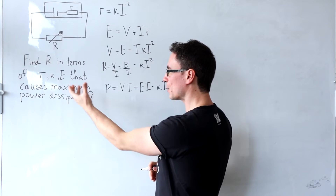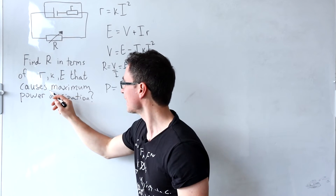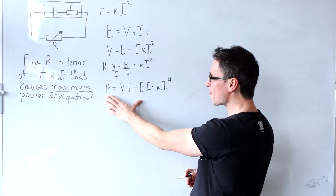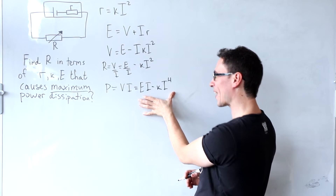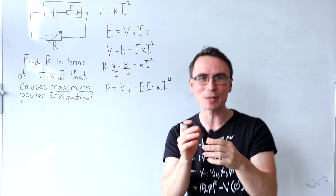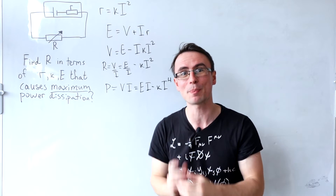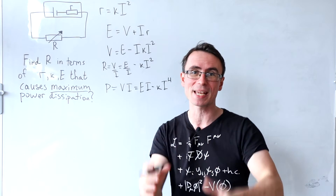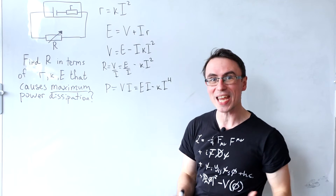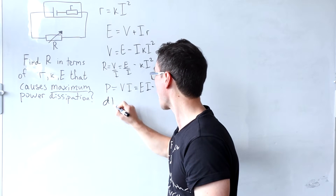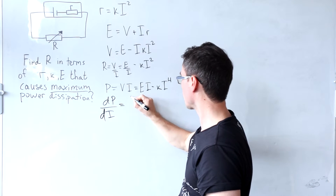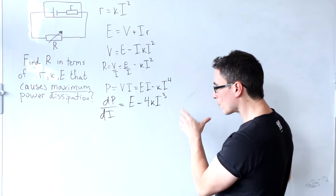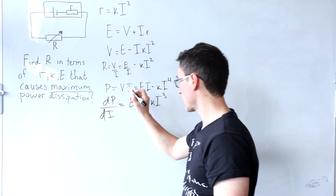Anytime you read a question in which we're looking for the maximum power dissipation, this maximum is a clue that we need to involve calculus. In order for there to be maximum power, this function of I will need to have its first derivative equal to zero. If the second derivative is smaller than zero then we are sure that we have a maximum. So let's differentiate the power with respect to I: this will just be equal to E minus 4K times I to the power of three. Now let's set this first derivative equal to zero.